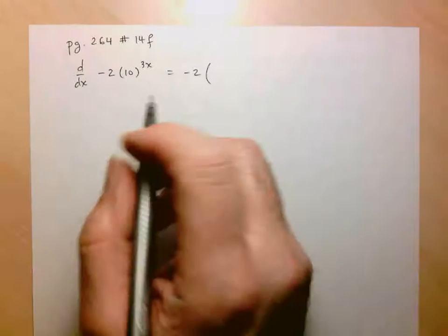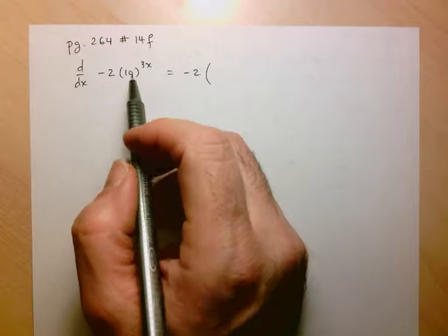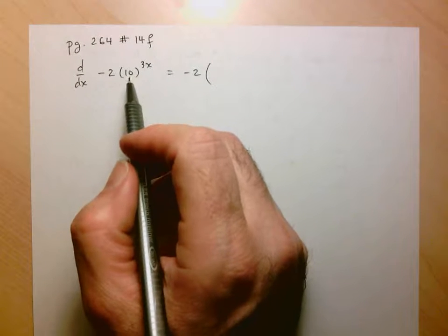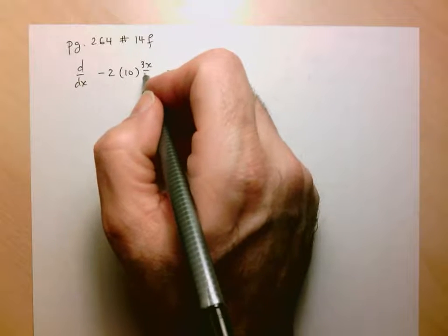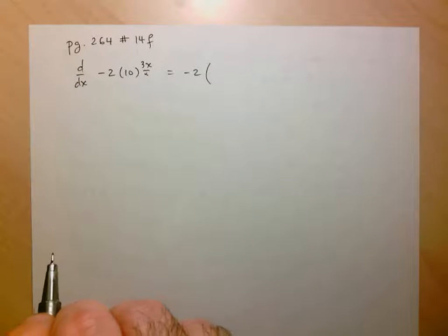Let's figure out what the derivative of this function is. Here I see that it's an exponential function with base 10, but I don't have 10 to the x, I have 10 to the 3x. So this 3x is going to act like my u, that's going to be a placeholder variable.